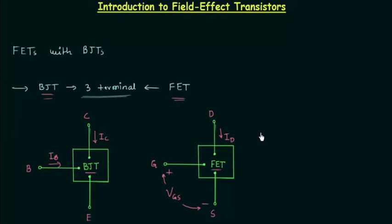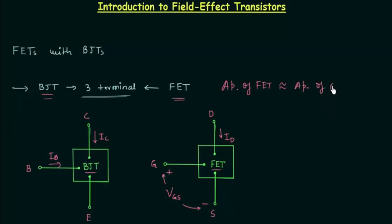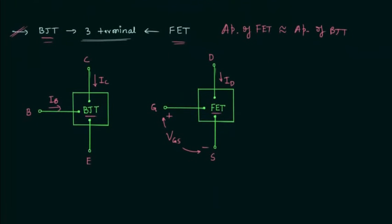These are the symbols of FET and BJT. The next difference is that both are used for the applications of switching and amplification purposes. The major application of FET is switching and amplification, and BJT is also used for those same types of applications.